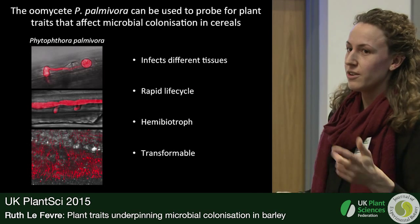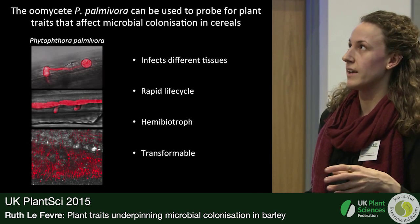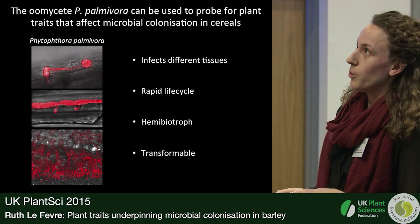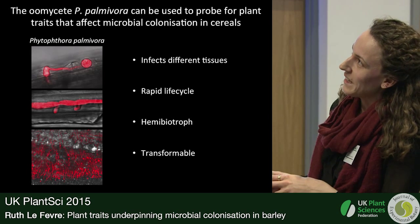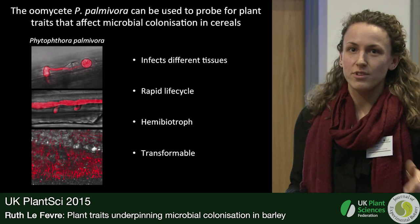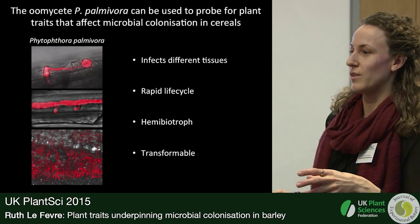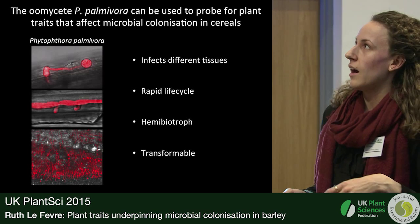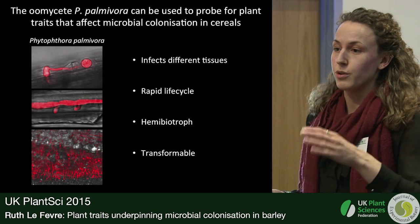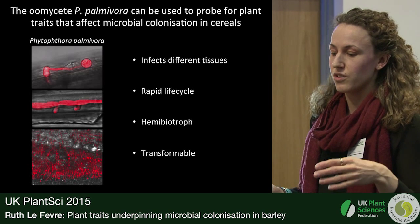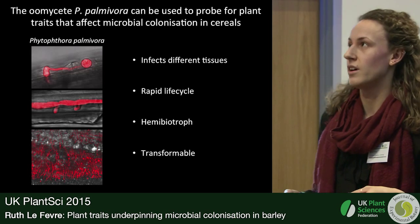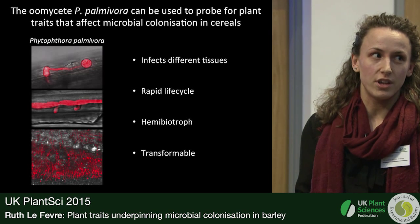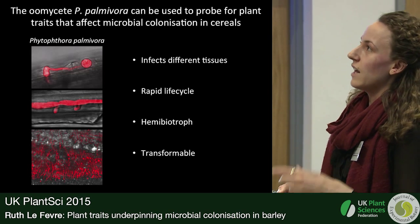In our lab, we are pioneering the use of a different pathogen to identify plant traits that control microbial colonisation. The pathogen we're using is an oomycete pathogen called Phytophthora palmivora, and there are some pictures of it here. It infects different tissues — both roots and leaves — which might enable us to do investigative studies in roots that have been missing from the literature, and to do root-shoot comparisons to see whether traits controlling microbial colonisation in roots are the same as those in shoots.